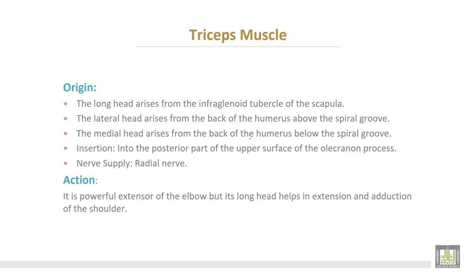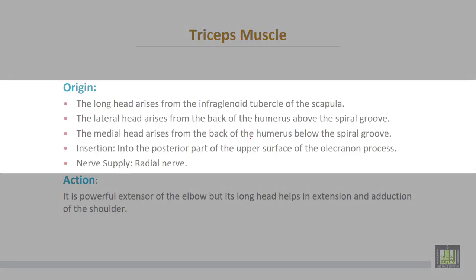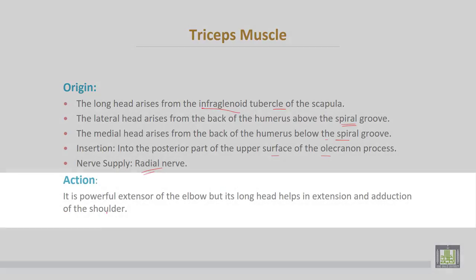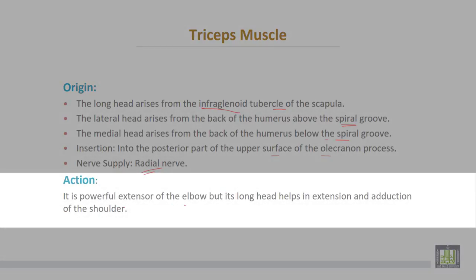The triceps muscle takes origin by three heads. The long head arises from the infraglenoid tubercle of the scapula. The lateral head arises from the back of the humerus above the spiral groove. The medial head arises from the back of the humerus below the spiral groove. Insertion is into the posterior part of the upper surface of the olecranon process of the ulna. Nerve supply from the radial nerve. Action: it is a powerful extensor of the elbow joint, but its long head also helps in extension and adduction of the shoulder joint.